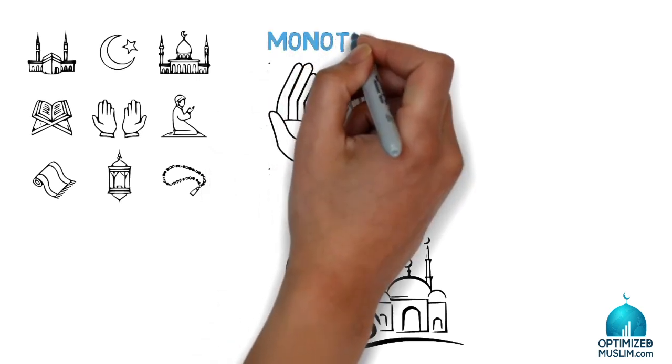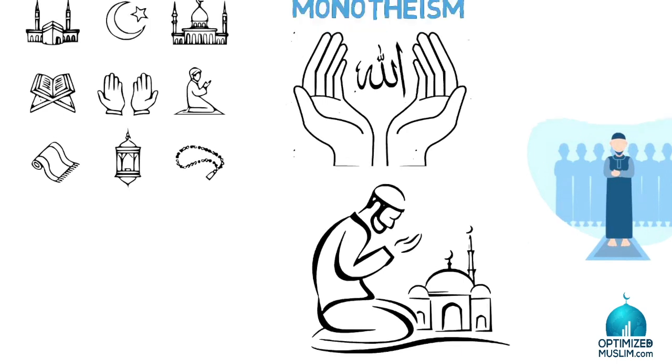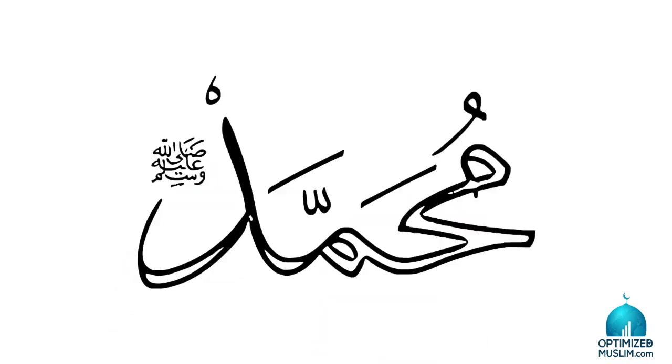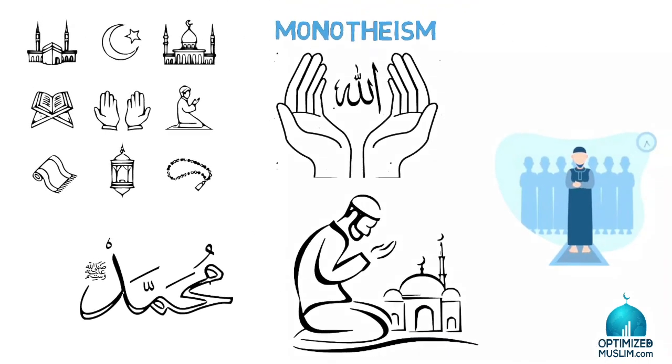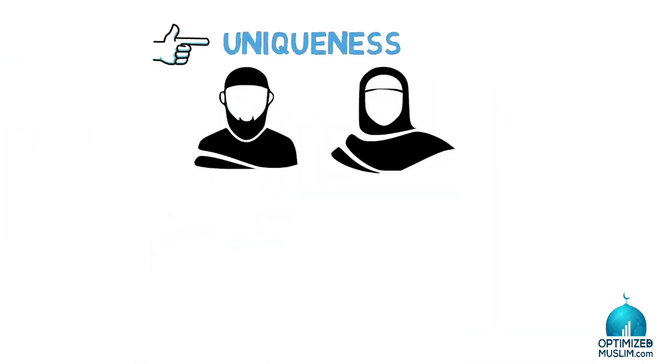People naturally love monotheism, uncompromising monotheism. They are attracted to the simplicity of Muslim worship, bowing and prostrating without icons, without statues. They are attracted to the Prophet, who was respectful of others yet uncompromising when it came to his principles. People respect that. Even his enemies respected him for that.